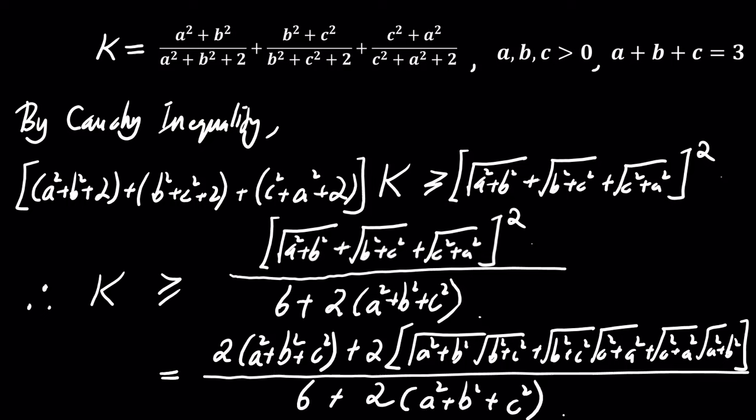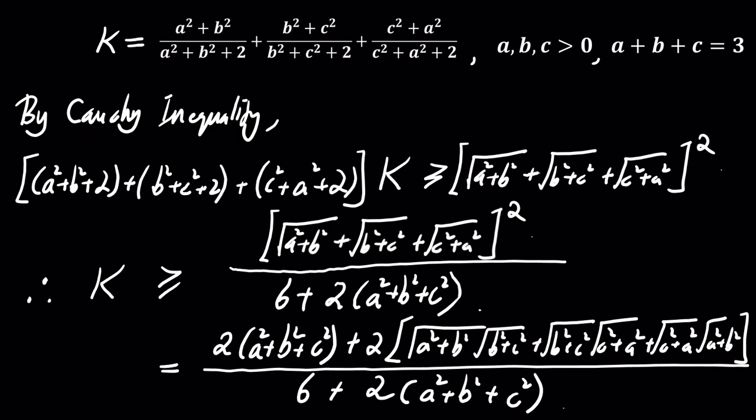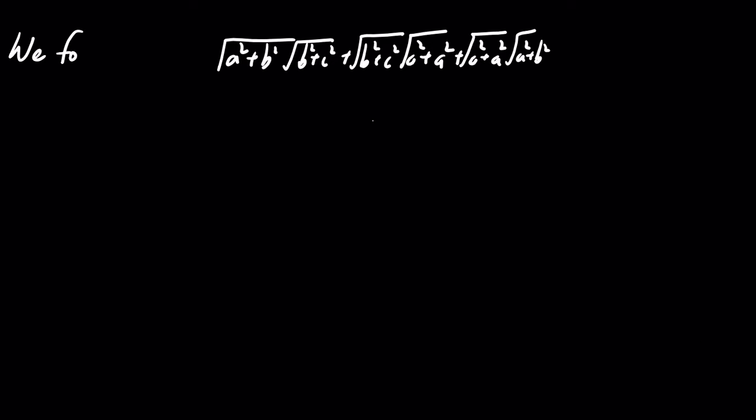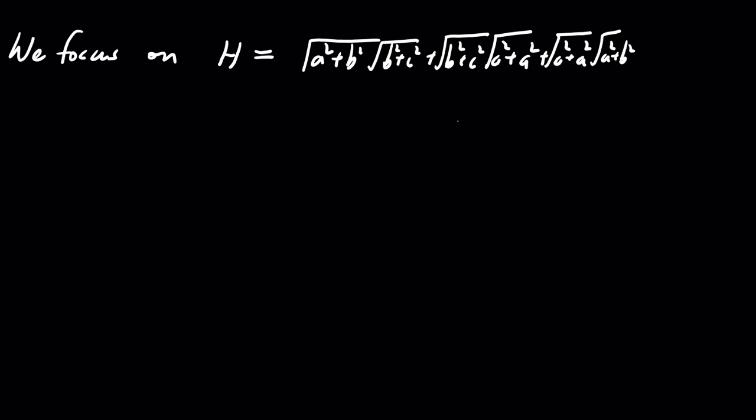Now, let's shift our focus to another helpful expression, h. We define h: the square root of A squared plus B squared, multiplied by the square root of B squared plus C squared, multiplied by the square root of C squared plus A squared.